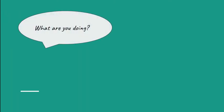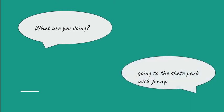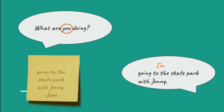When we talk, we often don't use complete sentences, especially if we're answering a question. Your mom asks, 'What are you doing?' You answer, 'Going to the skate park with Jenny.' You've communicated without a problem, but only because she already knows she's talking to you. What you meant is, 'I'm going to the skate park with Jenny.' If you're going to write it down, you need to include the subject again.